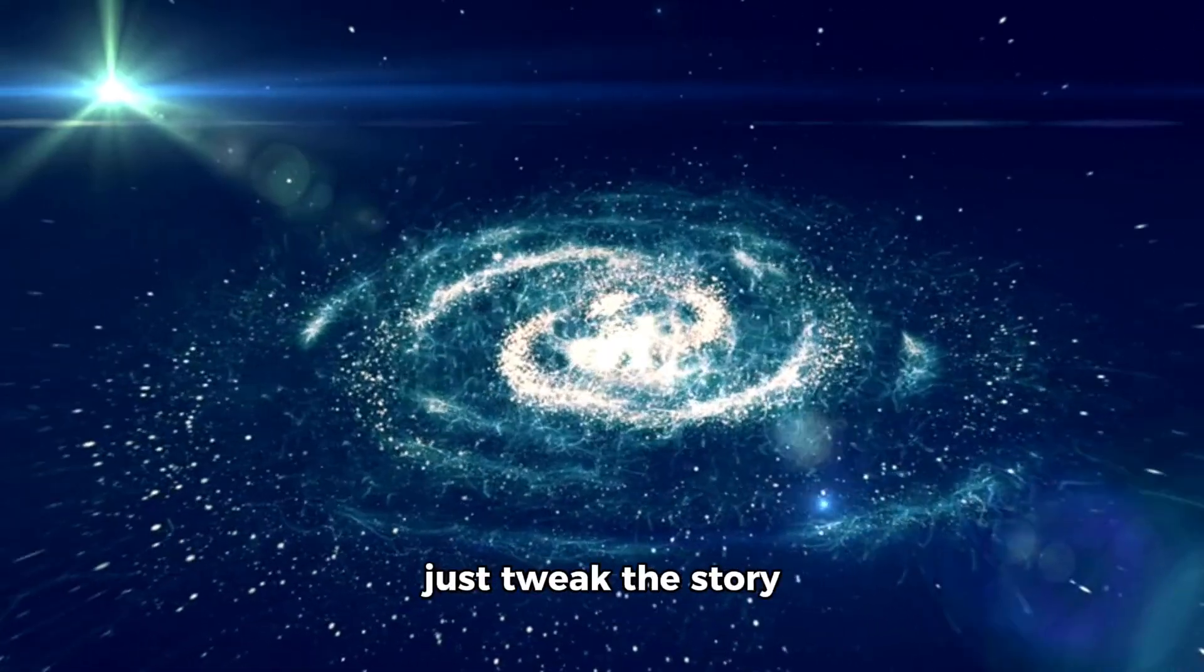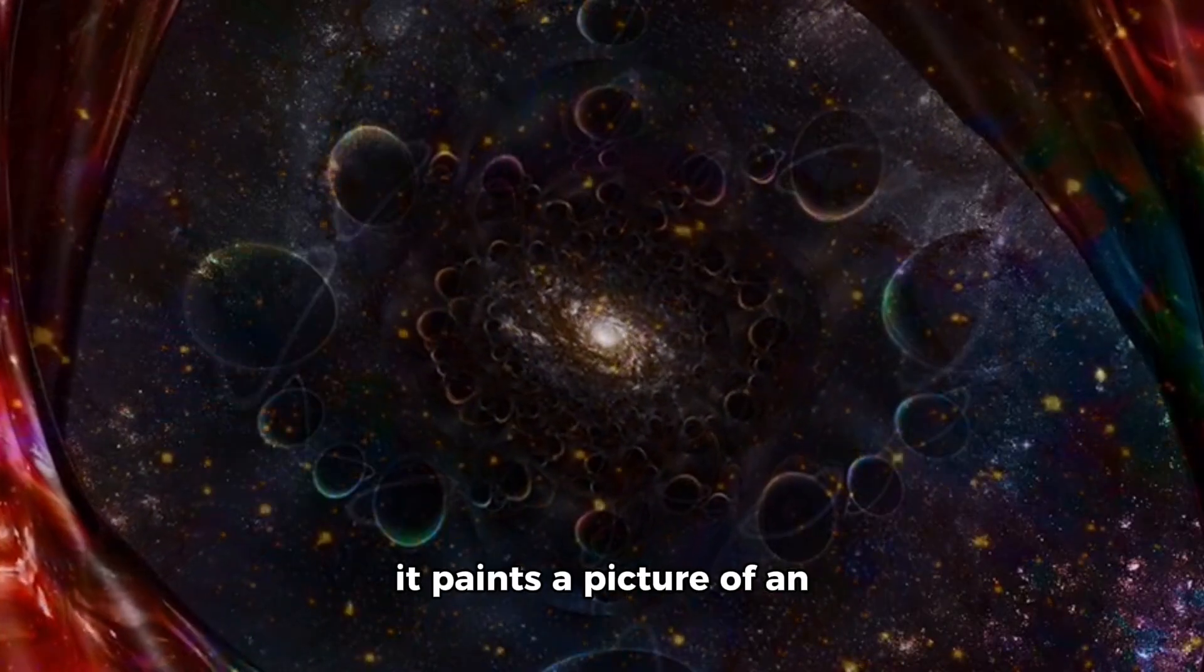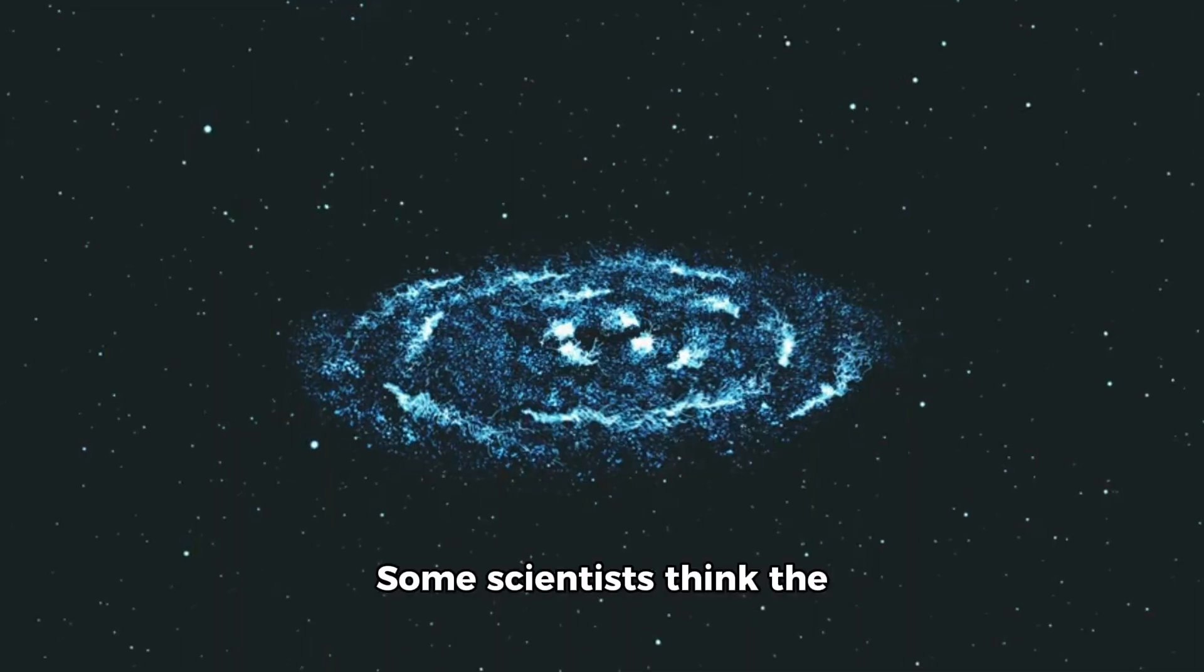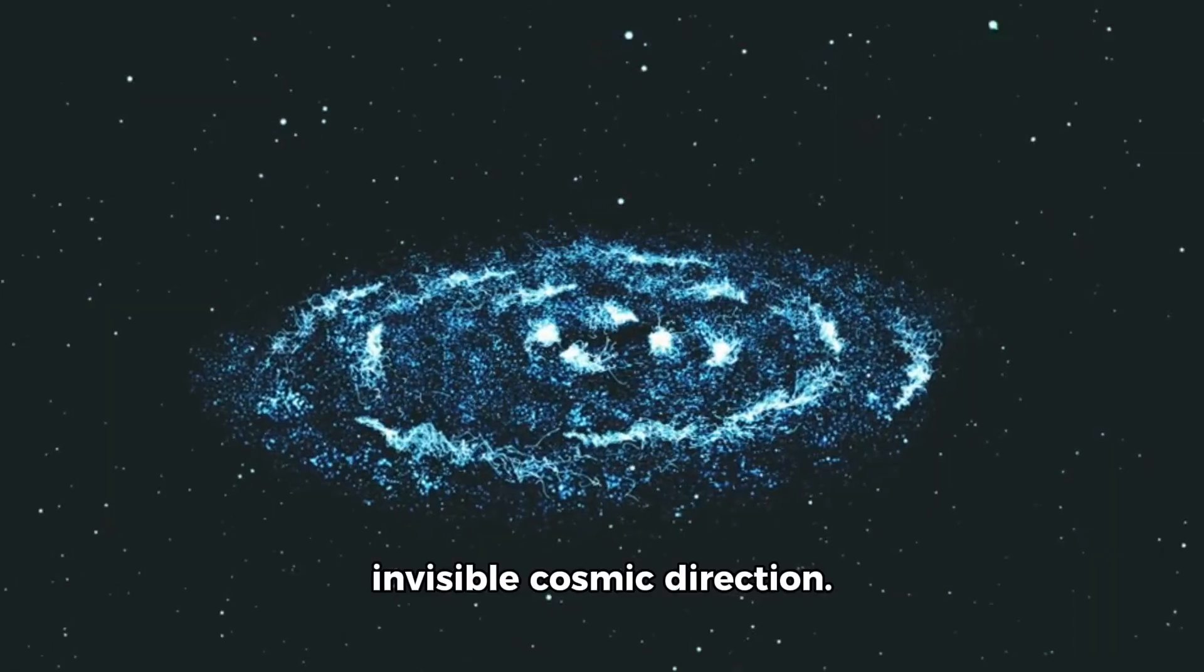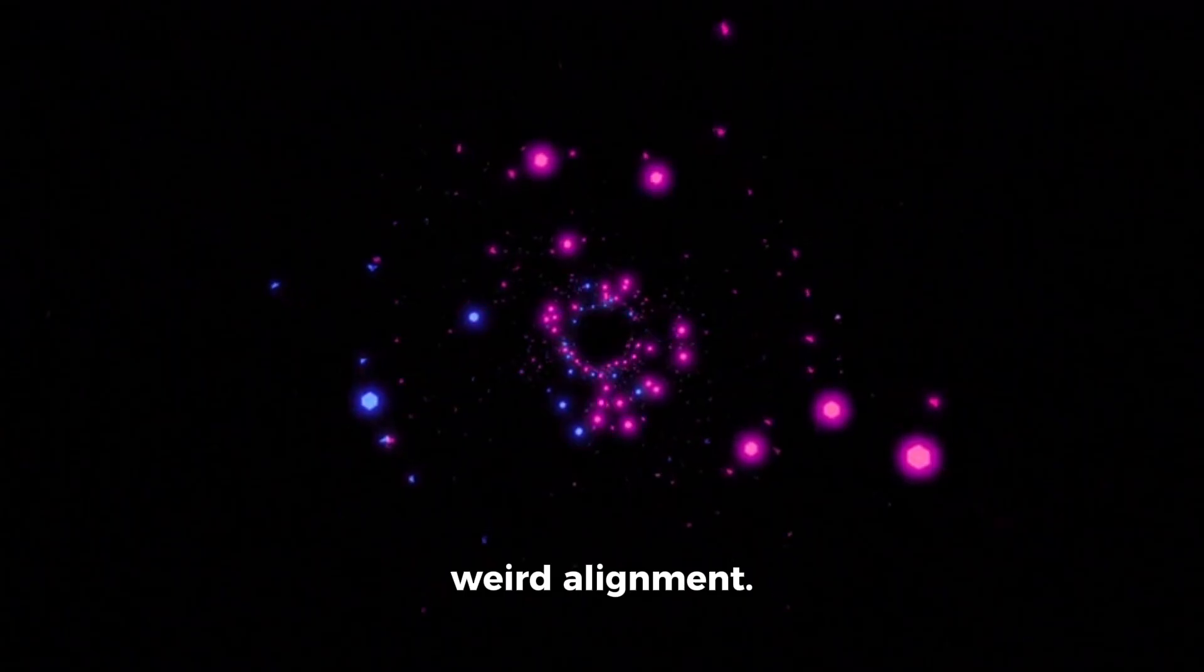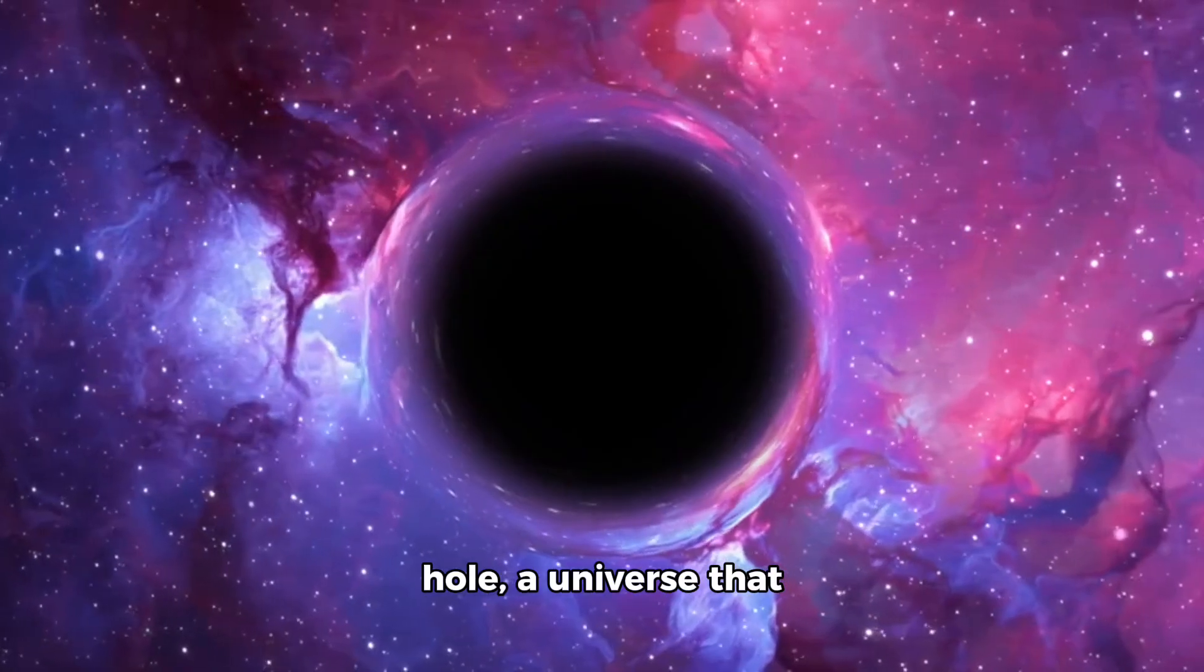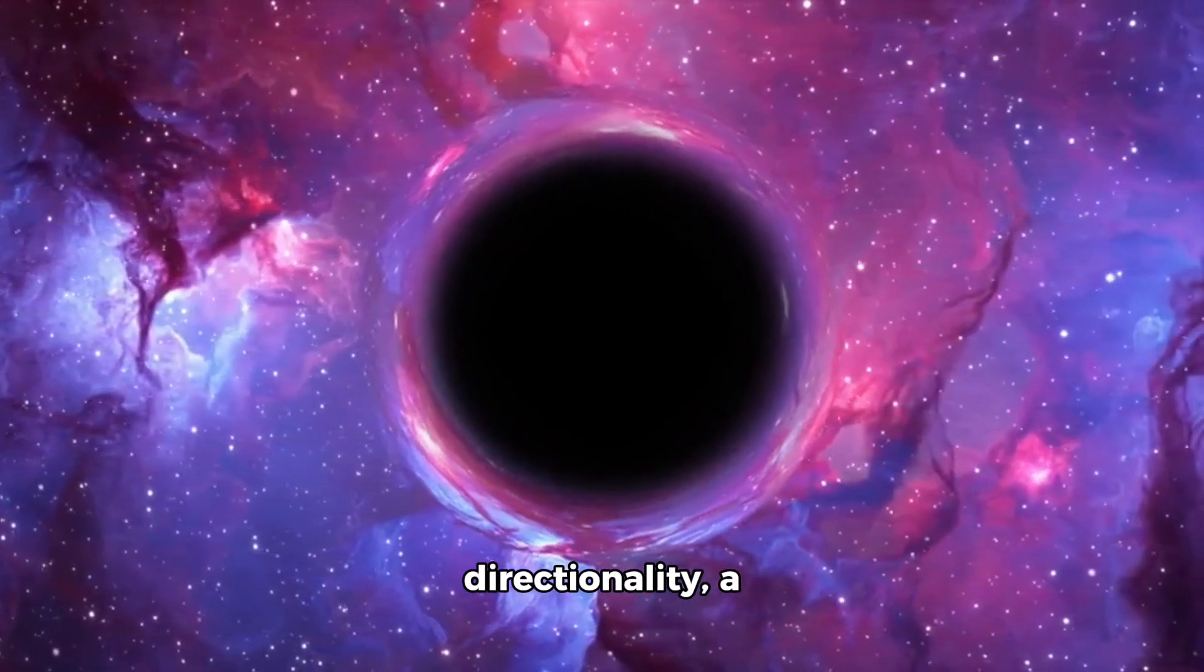This theory doesn't just tweak the story of cosmic origins, it completely flips it. Instead of a one-time bang, it paints a picture of an eternal self-replicating chain of universes, each one born from the black holes of the last. And here's another curveball. Some scientists think the universe might even have a preferred axis, an invisible cosmic direction. Observations of galaxy clusters and large scale structures show a weird alignment. Things aren't as randomly scattered as we expected. Why does that matter? Because in a universe born inside a black hole, a universe that rotated at birth, you might expect that kind of built-in directionality, a cosmic spin, if you will.